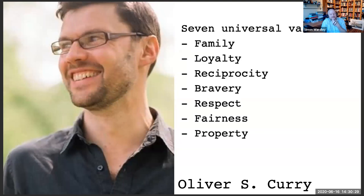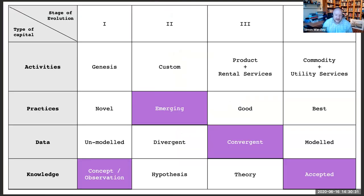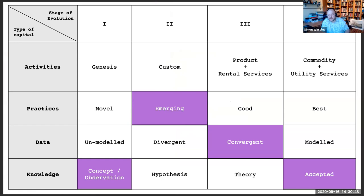I started looking at how to map these terms. For the axis at the bottom, stage one I'd use the word 'concept,' stage two 'emerging value,' stage three 'converging value,' and stage four simply 'accepted.'